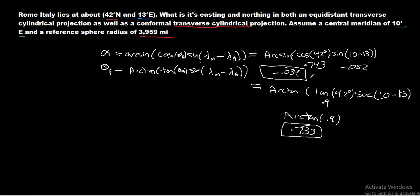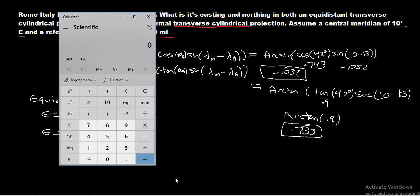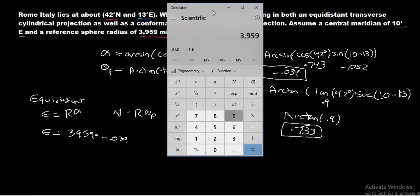Now we can calculate the equidistant projection. For the equidistant projection, the easting equals R times alpha, and the northing equals R times theta_p. So the easting is 3959 times negative 0.039, which gives negative 154.4, so approximately negative 154 miles.